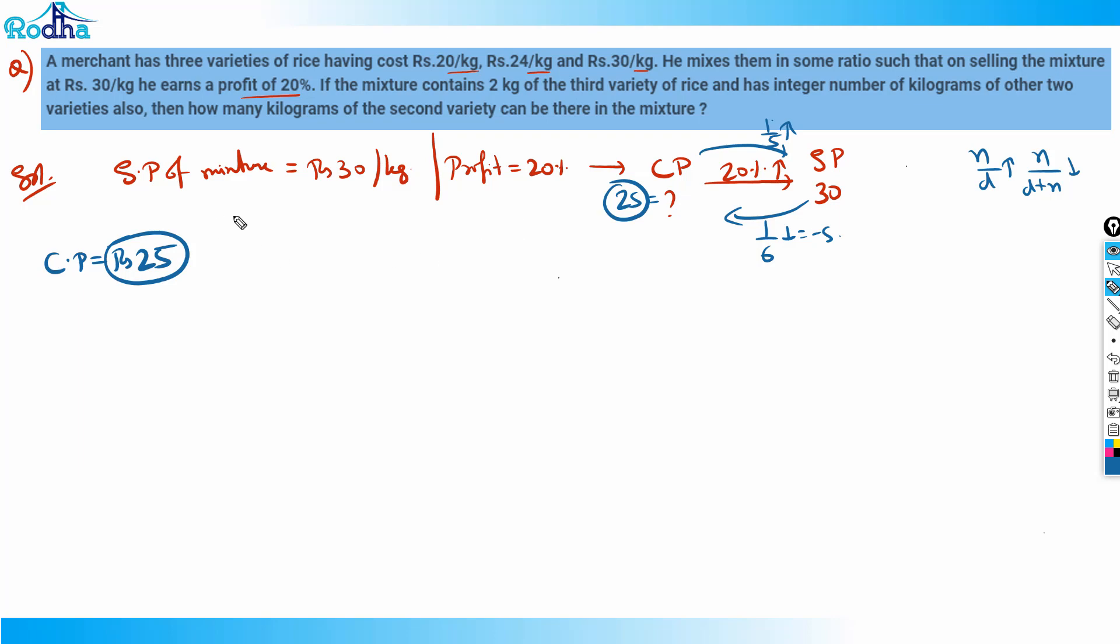The three variants are mixed to obtain a mixture that costs rupees 25 per kg. I can simply apply the formula of average weight here. Let's say x kg of first variety, y kg of second variety,